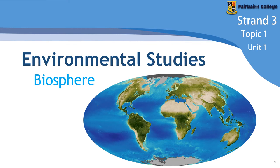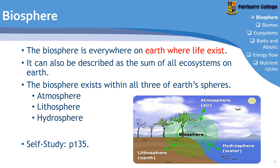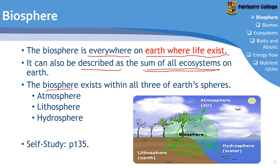Now we can have a look at the biosphere as an individual topic — we're not going to spend a lot of time on it. The biosphere is everywhere on earth where life exists, or we can say it's a thin layer of land, air, and water that supports life. It can also be described as the sum of all of the ecosystems on earth. The biosphere consists of three spheres: the atmosphere, the lithosphere, and the hydrosphere. Normally we'd go more in depth on these, but you should just be aware that the biosphere consists of these three spheres.